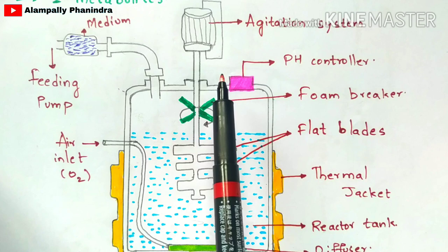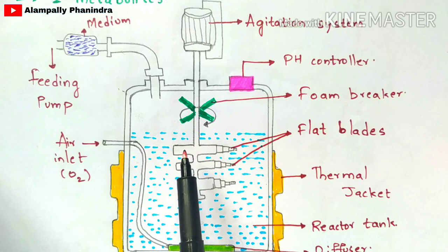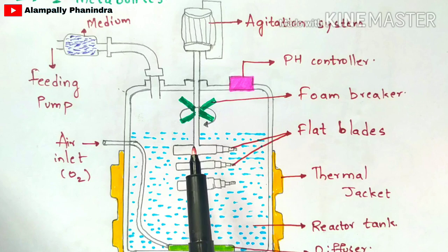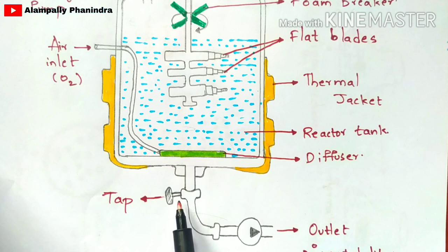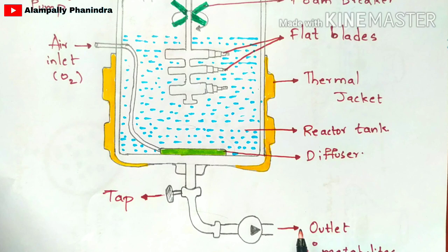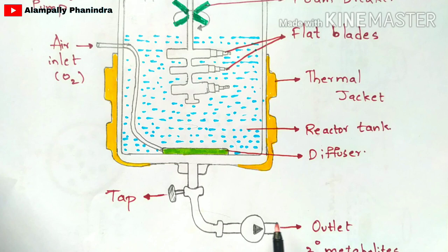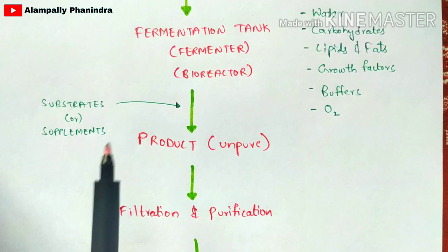Oxygen is introduced through the oxygen inlet into the fermentation tank, which now contains nutrient medium and primary metabolites. You switch on the fermentation tank so that the flat blades inside start rotating due to the motor in the agitation system. Temperature and pH are controlled, and the blades rotate using electricity. After a particular period of time, primary metabolites get converted into secondary metabolites, which are collected through the outlet.